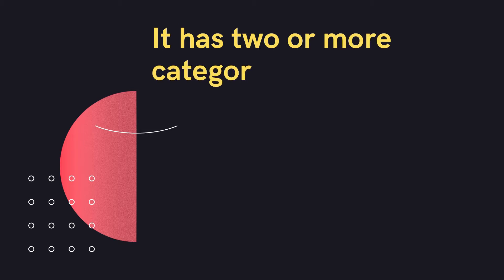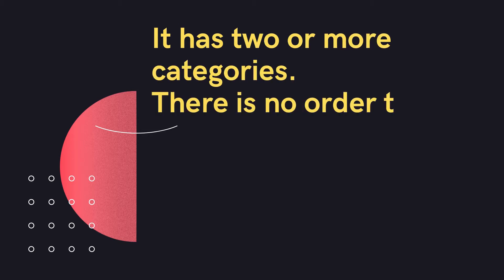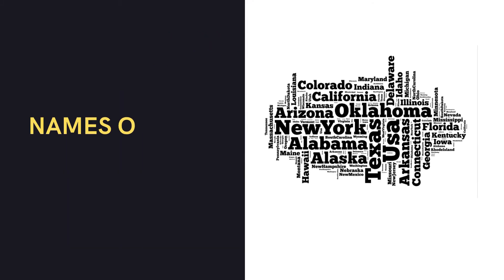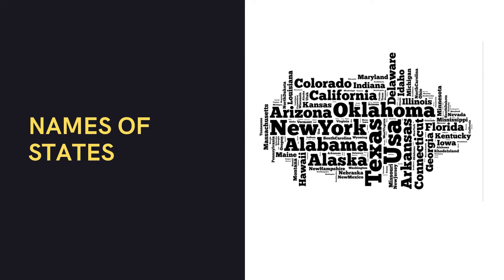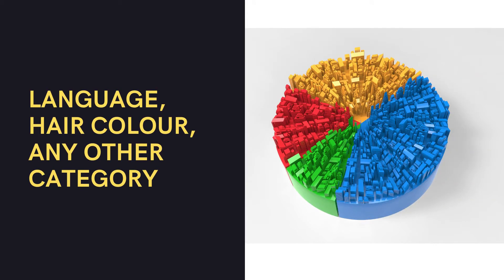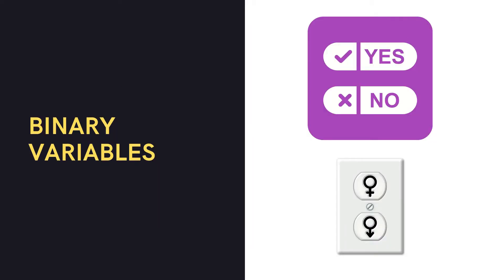If we are dealing with categories, it's the categorical level of measurement. Categorical variables are also known as nominal variables. They are about categories — there can be two or more categories, but an important thing is that there is no order to the categories. The categories could be the names of a state, the language you speak, the hair color you have, or any other demographic category. When there are only two categories, such as yes or no, male or female, on and off, these are known as binary variables.